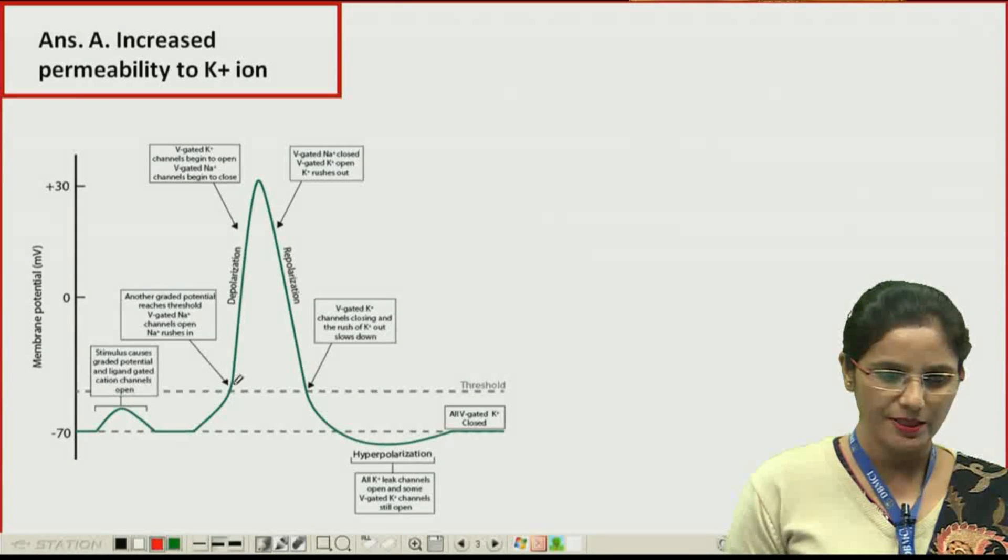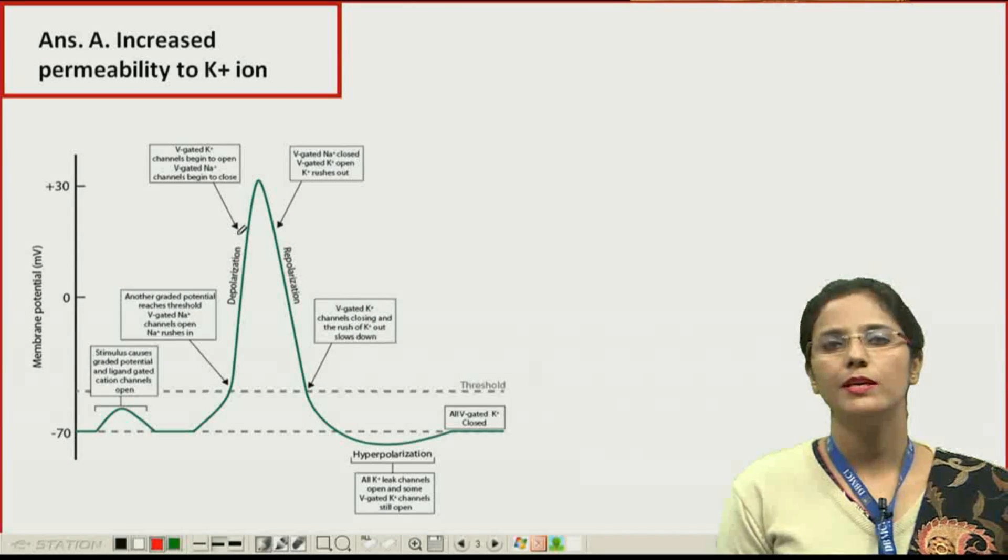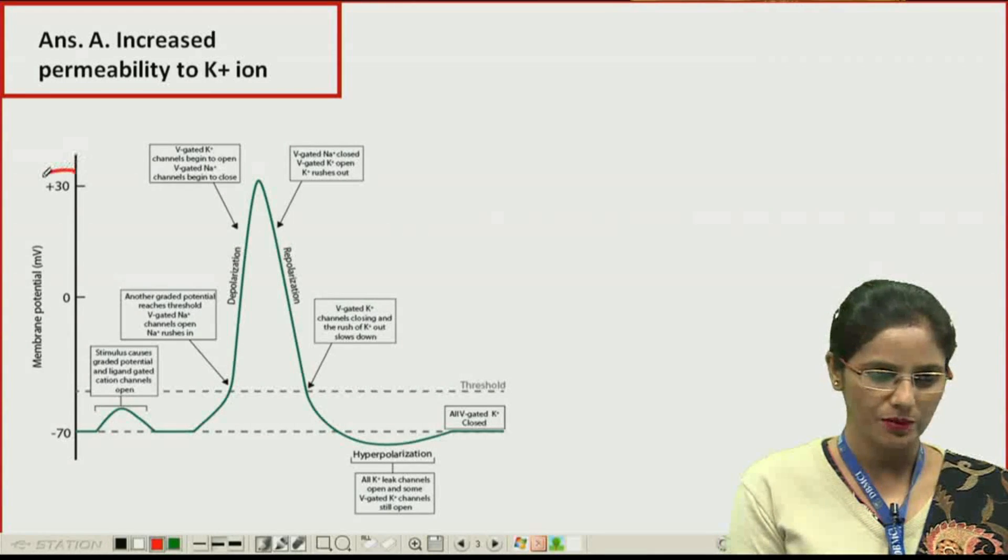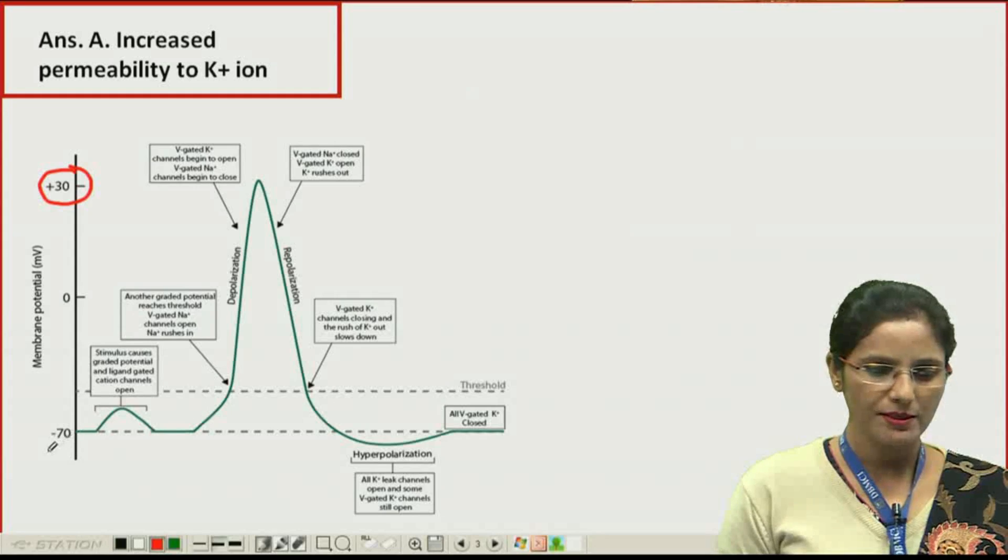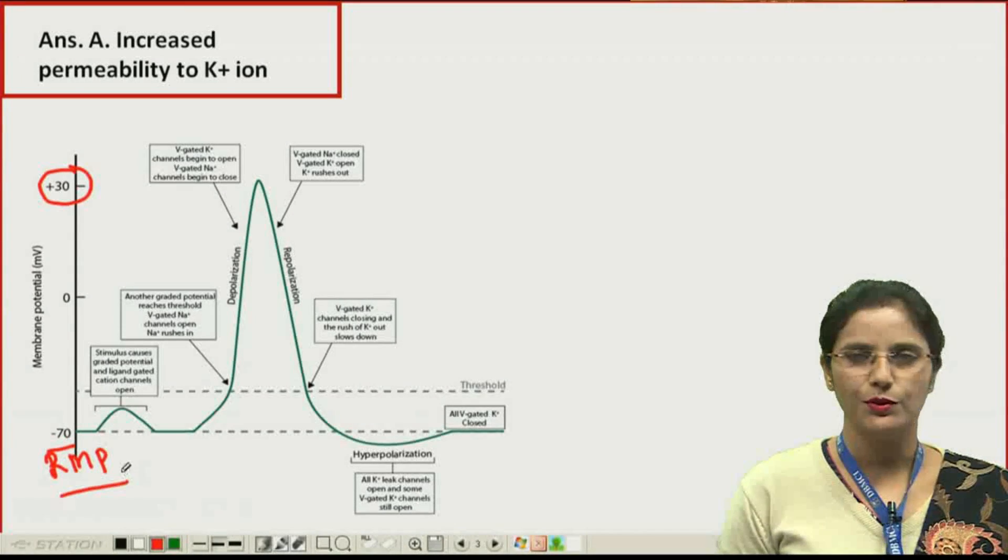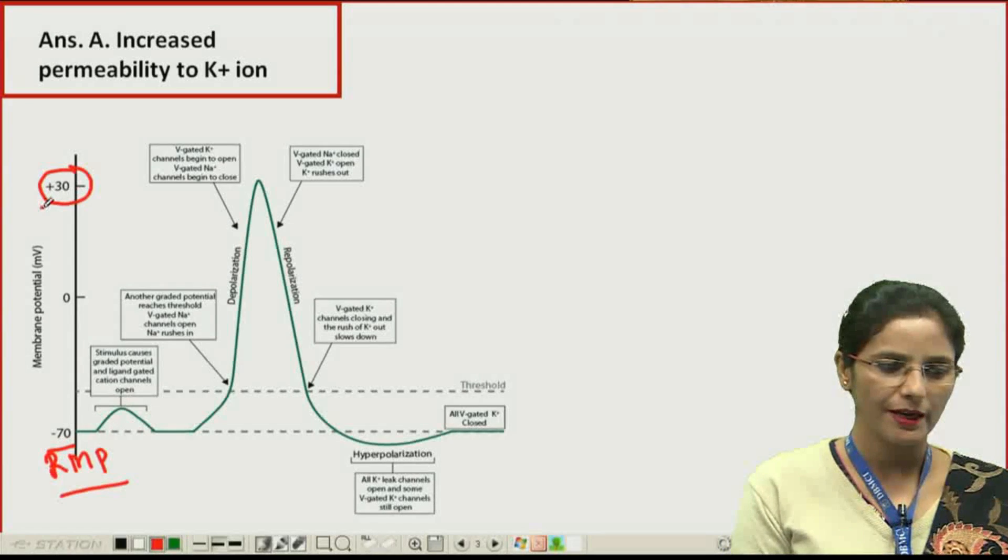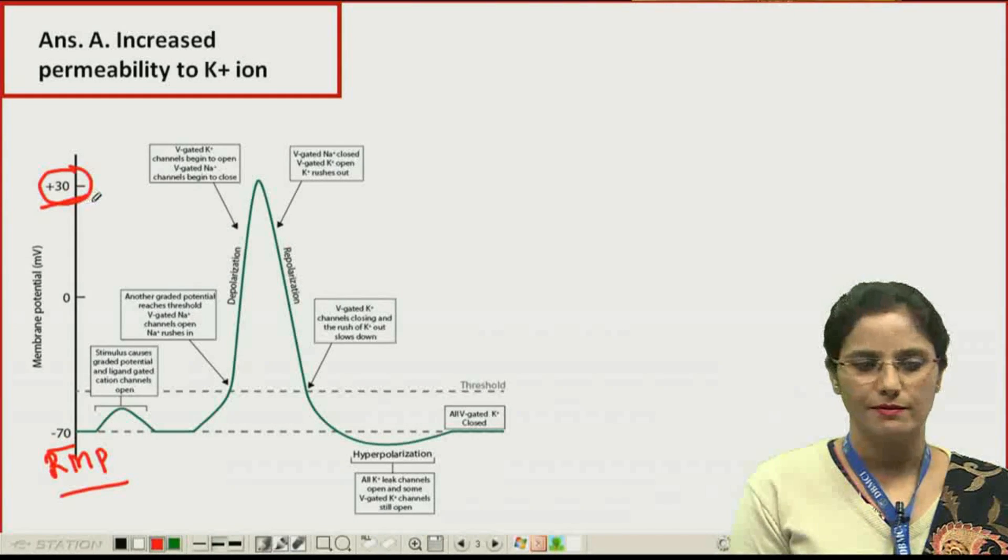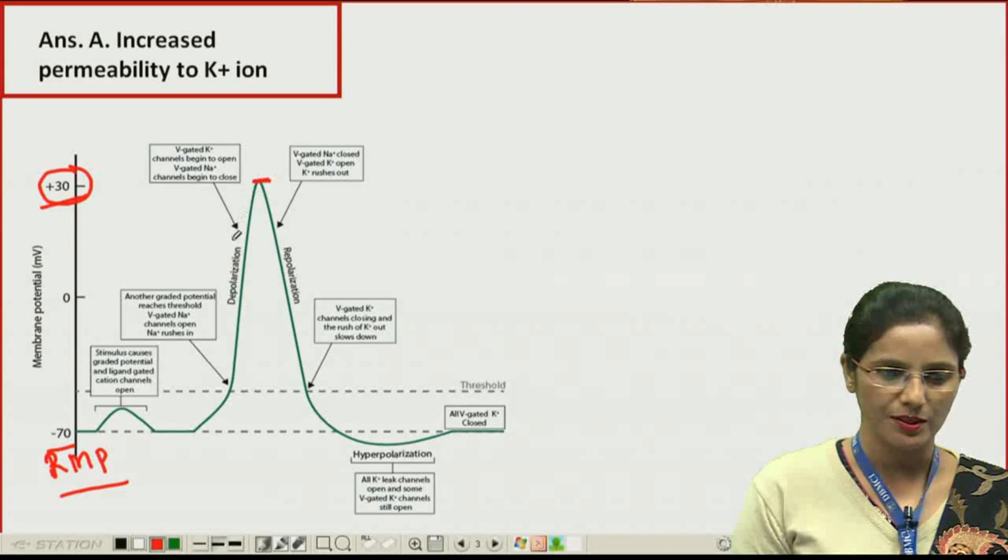One is the depolarization, which is the polarity going towards the positive side from minus 70, which is the resting membrane potential of a neuron. It goes to the highest level, plus 30, the spike potential.